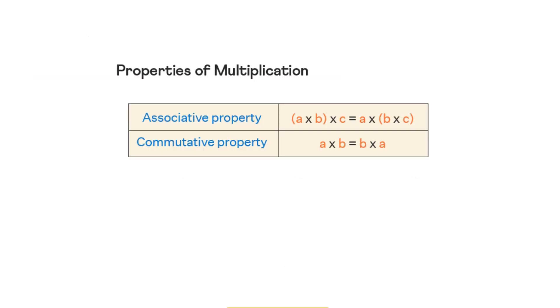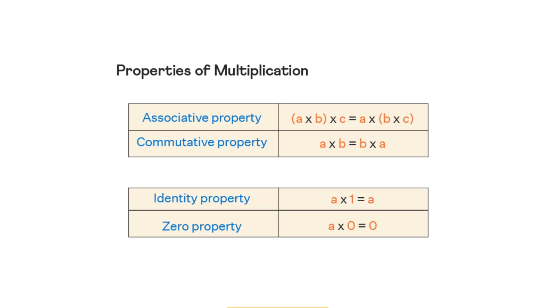Like addition, multiplication is both commutative and associative. Any number multiplied by zero is zero. Any number multiplied by one is itself, so one is called the multiplicative identity.